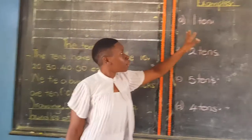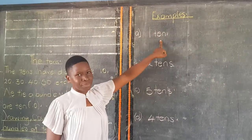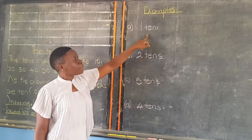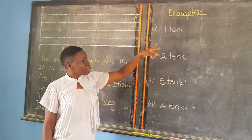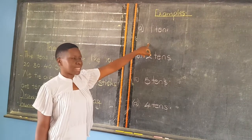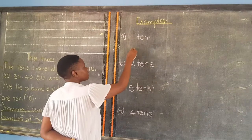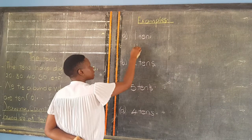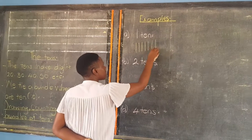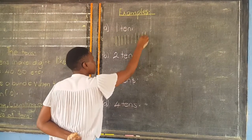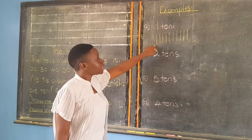For example, we have Part A, which is saying one ten. One ten — meaning we are going to draw one bundle of tens, and in that bundle there must be ten sticks. This is the way to go. We say one bundle is the same as counting one, two, three, four, five, six, seven, eight, nine, ten. Make sure you count and find that the sticks are ten.